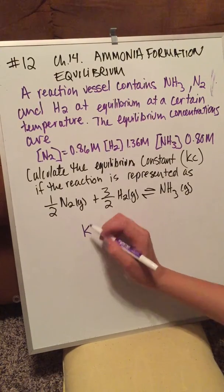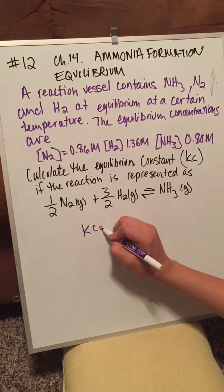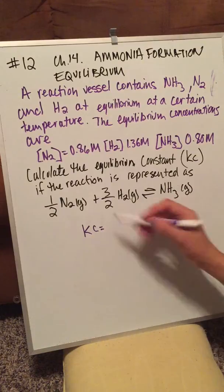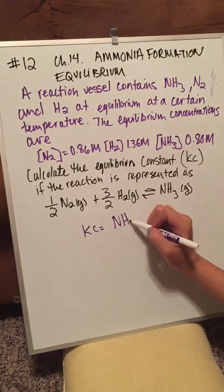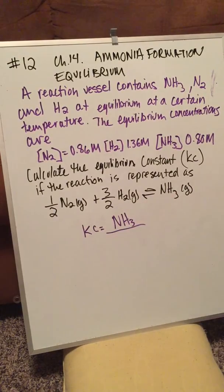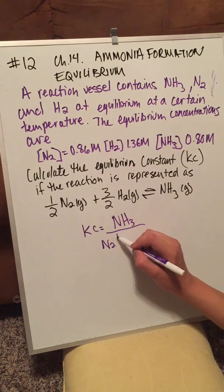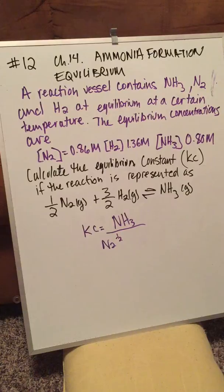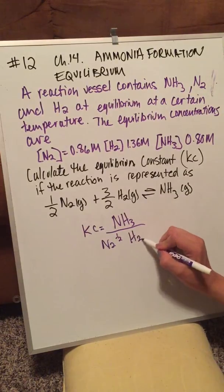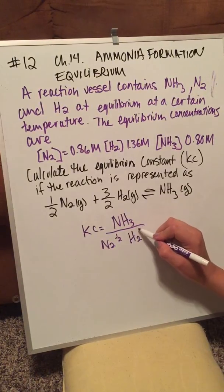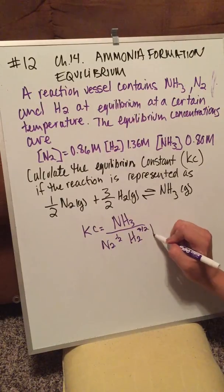So that is Kc equals our products go on top, ammonia, over N2 to the 1/2 and then H2 to the 3/2.